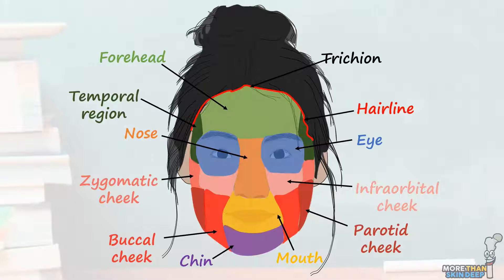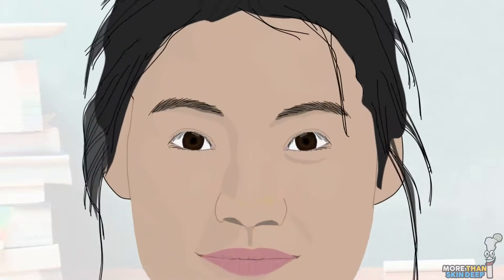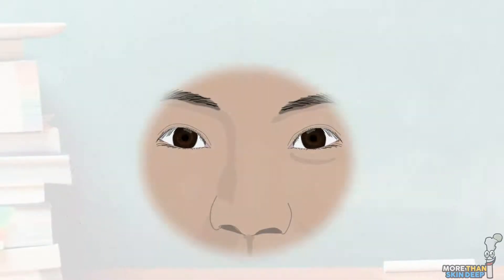Now we're familiar with the broad regions of the face, let's look more closely at some points of interest, beginning with the nose. The nose is of particular interest to plastic and reconstructive surgeons, as it forms an integral part of our outward appearance. It's also a very common place to operate, either due to trauma, which is very common here, or due to the high prevalence of skin pathologies, such as cancer.